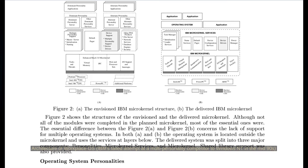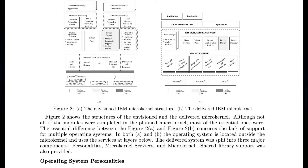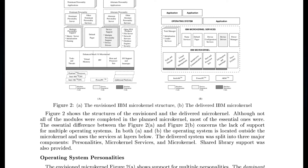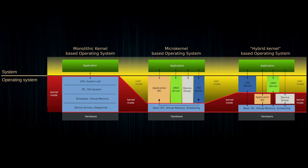Another thing that micro-kernels can make easier is implementing multiple personalities, providing compatibility with different existing OSs in one system, although this is much less relevant in the modern world with only a few mainstream OSs and widespread use of virtualization. In between typical monolithic kernels and typical micro-kernels, there are also a few different forms of hybrid kernels, which are basically a way to try to retain some of the advantages of micro-kernels while avoiding the performance issues of certain types of micro-kernels.